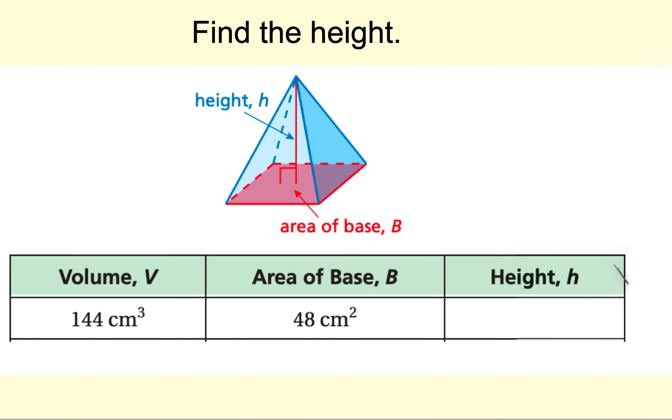Let's go ahead and do a backwards problem. And we're given some information. We want to find the height. So again, we start off with the formula. Volume is equal to 1 third area of the base times the height. We've been given the volume, 144. We've been given the base, which is 48. And we are looking for the height, which is h.